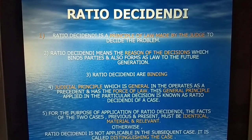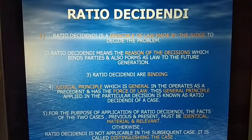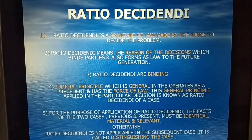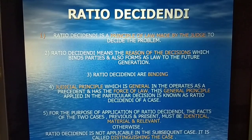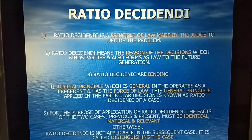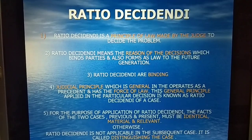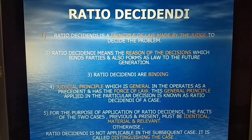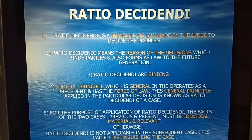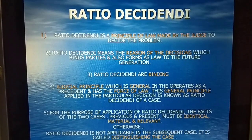Ratio decidendi is a principle of law made by the judge to decide the problem. Second, ratio decidendi means the reason of the decisions, which binds parties and also forms as law to the future generation.